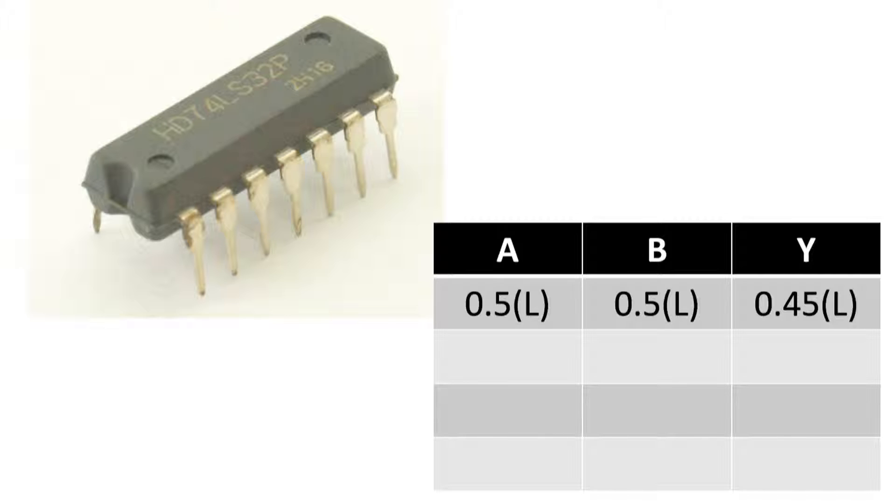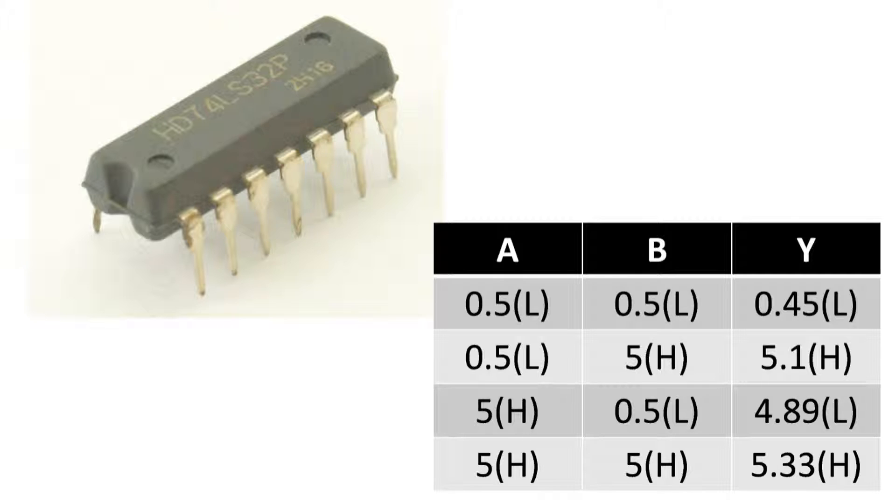We took two voltages from power source: 0.5 volt which would be state 0, and 5 volt which would be state 1. 0.5 volt, 0.5 volt means inputs are zero zero - we got output 0.45 volt, means 0. 0.5 volt and 5 volt means input combination is 0-1, the output is 5.1 volt, that is state 1. 5 volt and 0.5 volt means input combination is 1-0, we get output 4.89 volt, that is state 1. 5 volt and 5 volt, that is input combination 1-1, all the inputs are high, the output is 5.33, that is state 1.